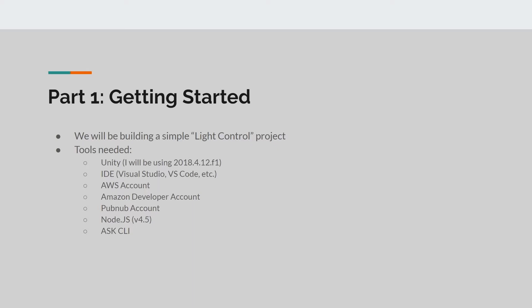Before we begin, be sure to have the following: Unity 3D — I will be using 2018.4.12.f1. An IDE such as Visual Studio or VS Code — I will be using VS Code. An AWS account. An Amazon developer account. A PubNub account. Node.js version 4.5 or above. And the ASK CLI. Links to these are provided in the description below.